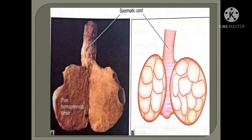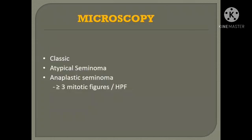Here comes the schematic representation for you to draw in your theory. You can draw these ovals here to show multi-nodularity. Coming to microscopy, based on the microscopy, we have three types: classic seminoma, atypical seminoma, and aplastic seminoma. Just remember the names — no need to go into the details.